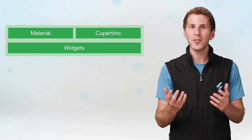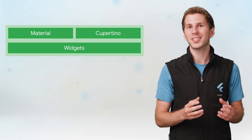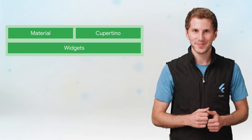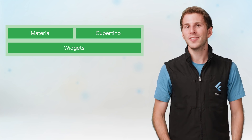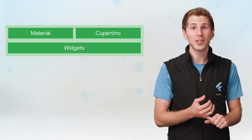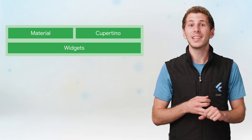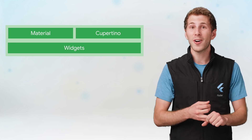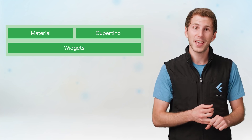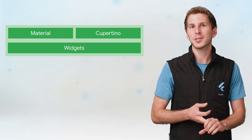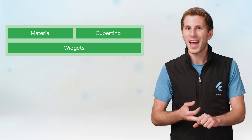With Flutter, everything you see on the screen is called a widget. A widget can define a structural element like a button or menu, a stylistic element like a font or color scheme, and even an aspect of layout like padding.